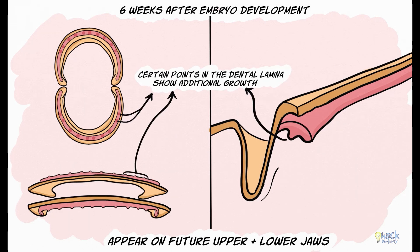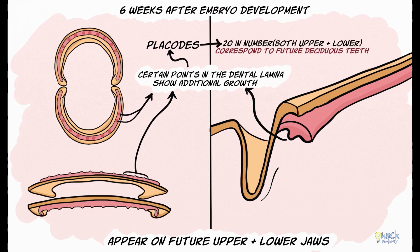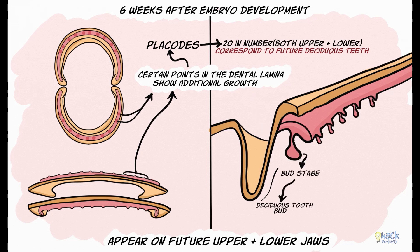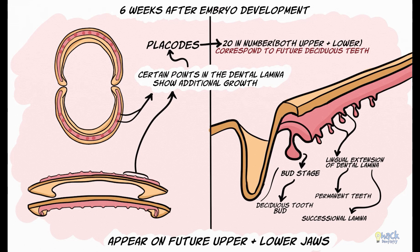Certain points in the dental lamina develop an additional growth of cells called placodes. These placodes protrude into the underlying mesenchyme. These points, 20 in number, correspond to the sites of the future deciduous teeth. The permanent tooth germs develop from lingual extensions of the dental lamina and are called successional lamina. It has to be noted, however, that permanent molars do not develop from successional lamina and arise from the dental lamina itself, posterior to the primary molars.